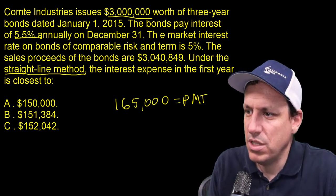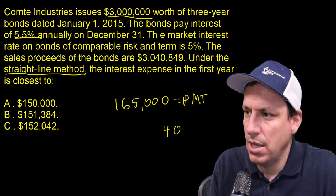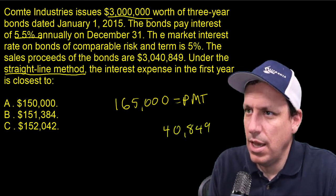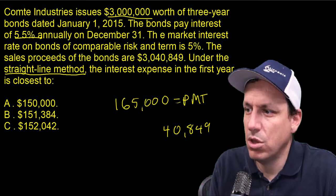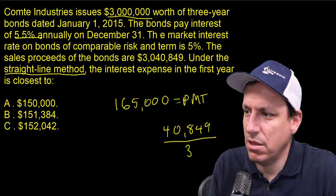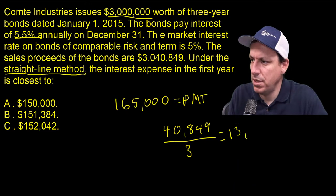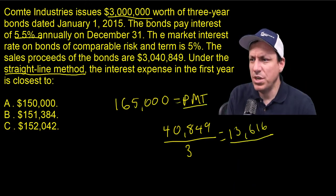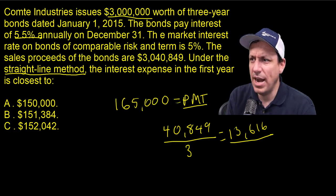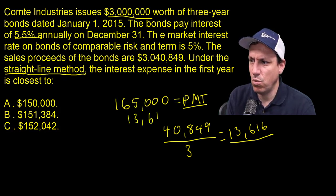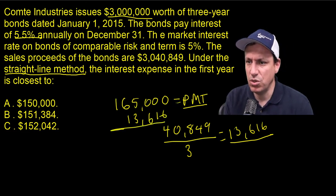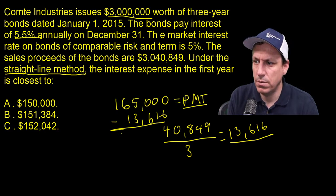The bonds are issued at a premium, so the premium is $40,849. And the bonds are three-year bonds, so that divided by three equals $13,616. Our interest expense is the coupon payment minus the amortization, so it's going to be $13,616 subtracted from the coupon payment of $165,000, which gets us to $151,384.